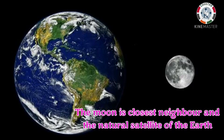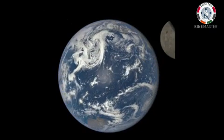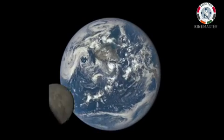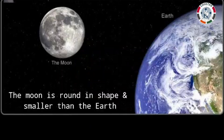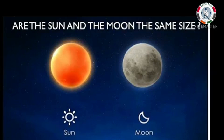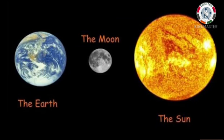A satellite is an object that revolves around a planet. The Moon is the natural satellite of the Earth. The Moon is round in shape and smaller than the Earth. Sometimes the Moon and the Sun seem to be of the same size. This is because the Moon is nearer to us and the Sun is very far away. But the Moon is much smaller than the Sun.